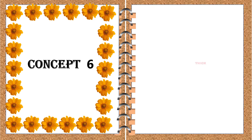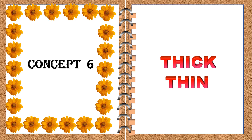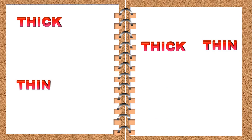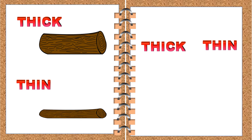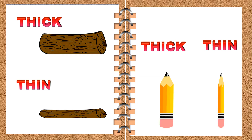The next concept is thick and thin. Let's look at the examples. This log is thick. This log is thin. This pencil is thick. This pencil is thin. So when we say thick and thin, we refer to the width of the object.